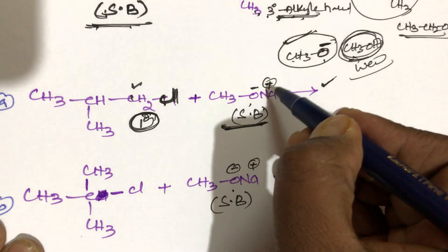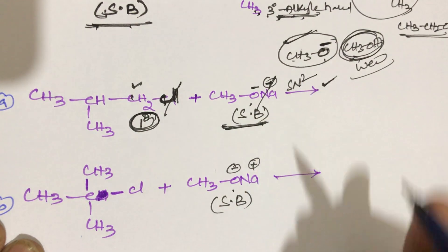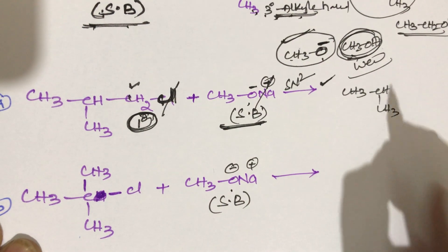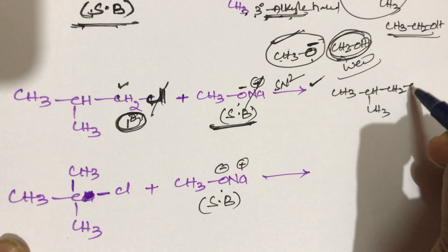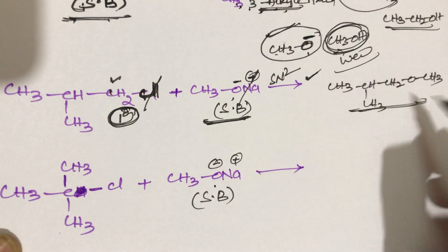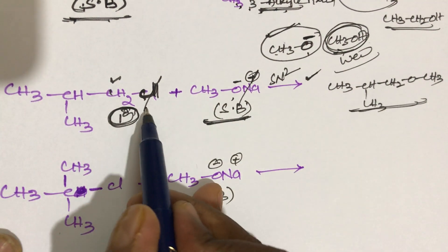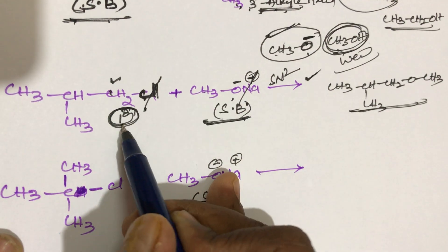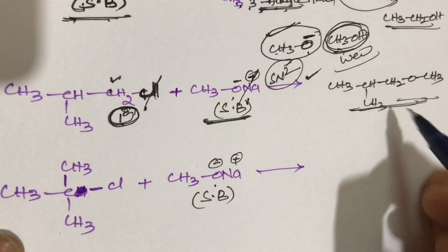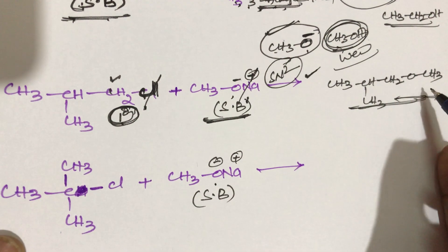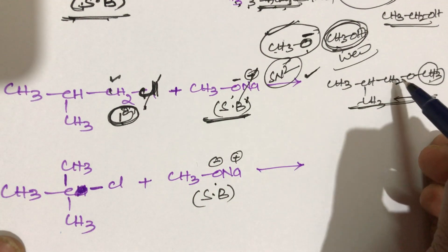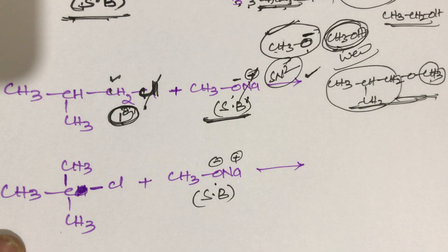What is the final product? NaCl is eliminated; it follows the SN2 mechanism. The overall final product is CH3-CH(CH3)-CH2-O-CH3. This is methyl isobutyl ether. This is the final product.